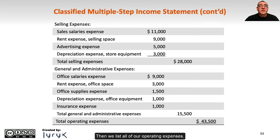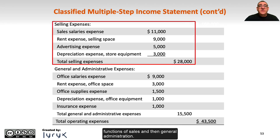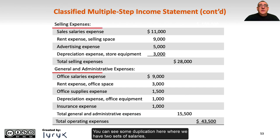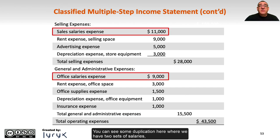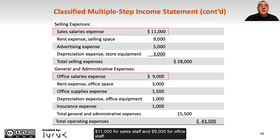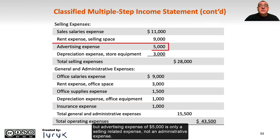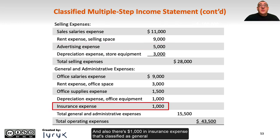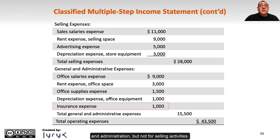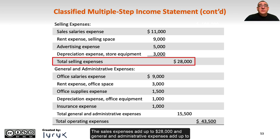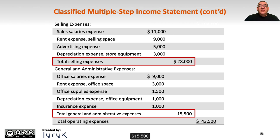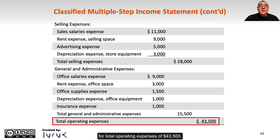Then we list all of our operating expenses. This example shows operating expenses classified by the business functions of sales and general administration. We have two sets of salaries: $11,000 for sales staff and $9,000 for office staff. We also have duplicate expenses for rent and depreciation across selling and admin, but advertising expense of $5,000 is only a selling-related expense, and $1,000 in insurance expense is classified as general and administrative only. Sales expenses add up to $28,000 and general and administrative expenses add up to $15,500, for total operating expenses of $43,500.